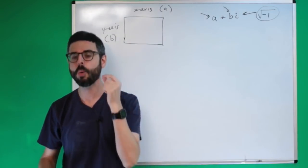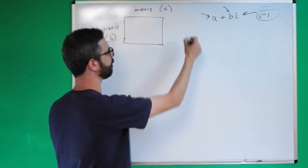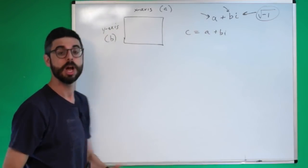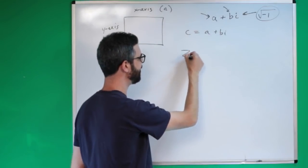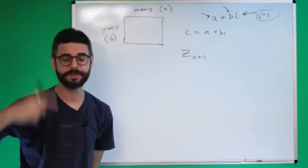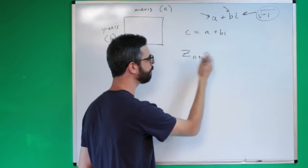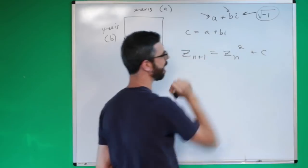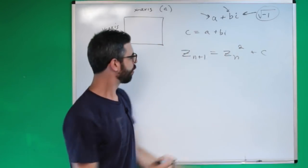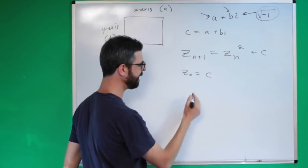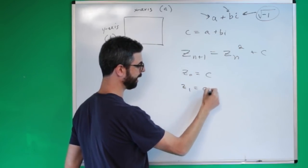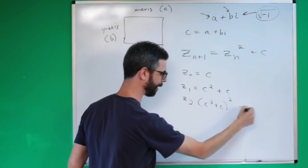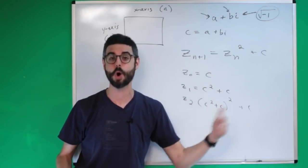In the Mandelbrot set, for every complex number c which equals a plus bi on this plane, we test an iterative function where z(n+1) equals z(n) squared plus c. So z sub 0 would be c, z sub 1 would be c squared plus c, z sub 2 would be c squared plus c squared plus c. This iterative process is what happens over and over again.